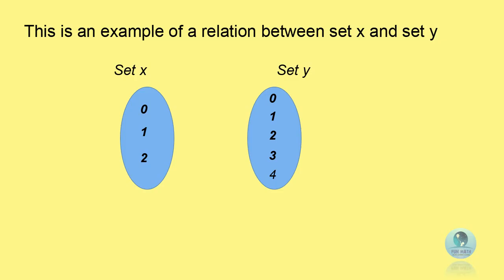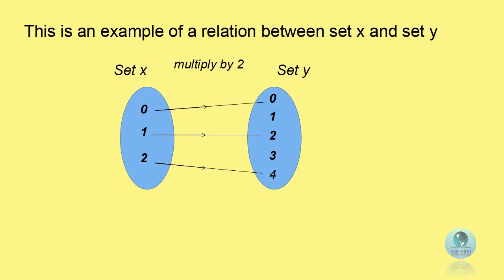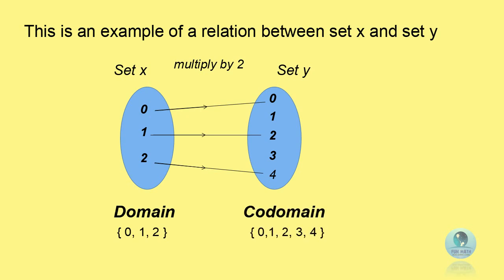Let's study the relation between set X and set Y. In set X, we have a set of numbers 0, 1, and 2. In set Y, we have 0, 1, 2, 3, and 4. Set X is mapped to set Y by a relation of multiplied by 2. All the elements in set X are called domain. All the elements in set Y are called codomain. Every element in domain is also called an object. Notice, the elements 0, 2, and 4 in set Y, which are connected to the objects in set X, are called the images.